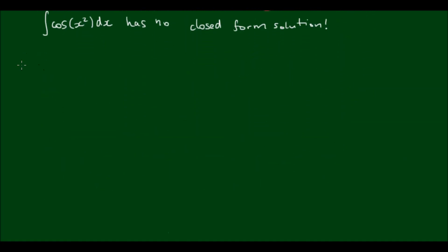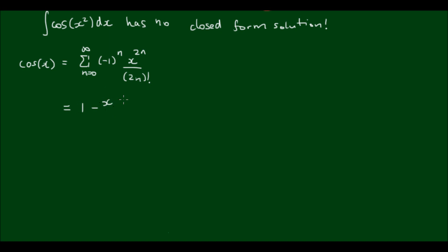In one of my recent videos we discovered that the Maclaurin series for cos(x) is the sum from n equals 0 to infinity of negative 1 to the power of n times x to the power of 2n divided by 2n factorial. Written out, this gives 1 minus x squared over 2 factorial plus x to the power of 4 over 4 factorial minus x to the power of 6 over 6 factorial, and so on.